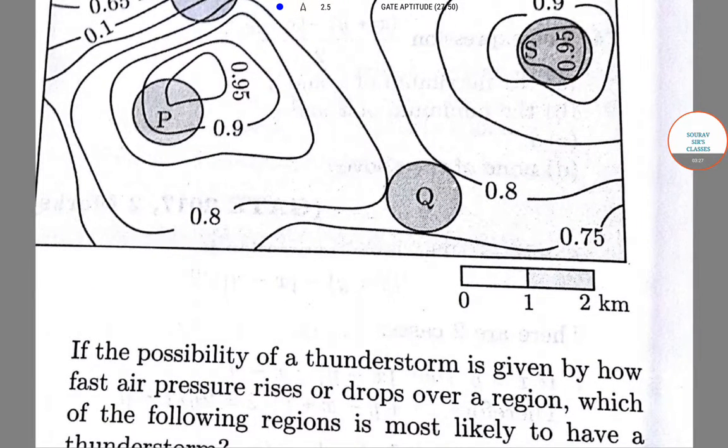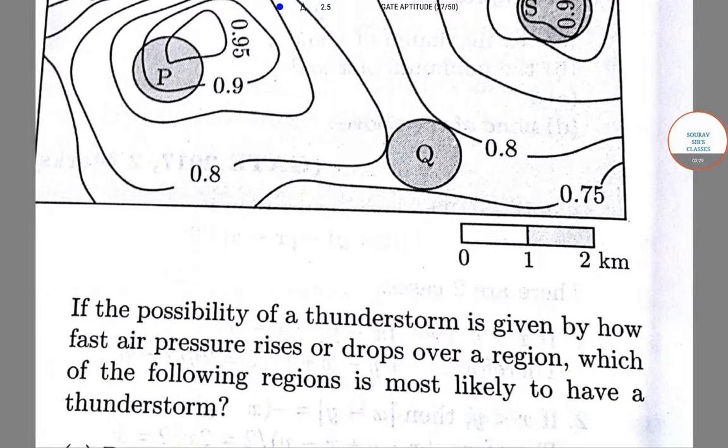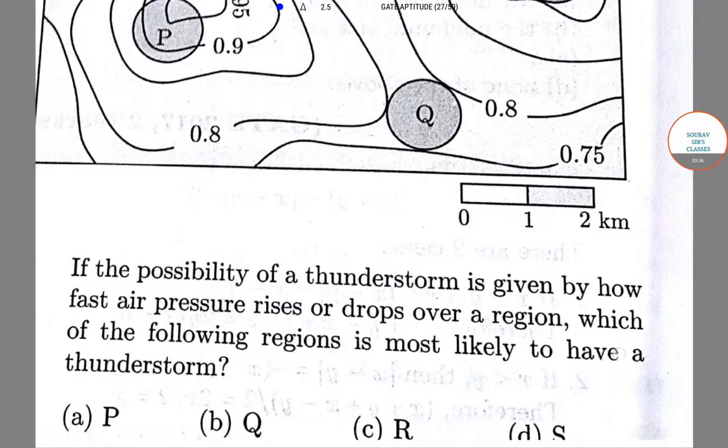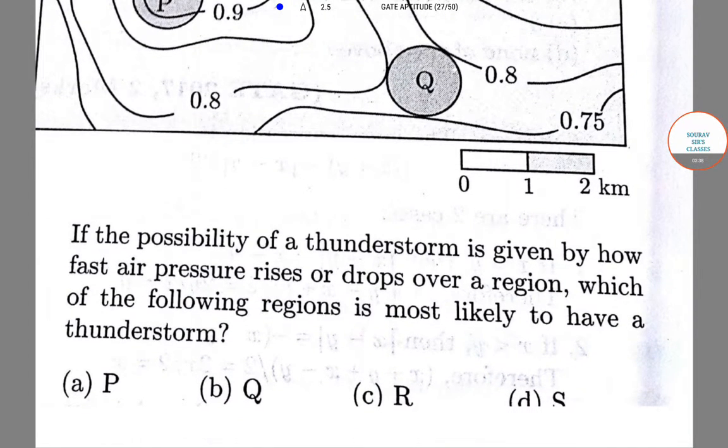Now, if the possibility of a thunderstorm is given by how fast air pressure rises or drops over a region, which of the following regions is most likely to have a thunderstorm: option A P, option B Q, option C R, and option D S.